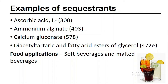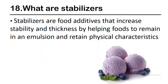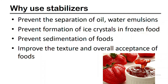Now, let's talk about stabilizers. Stabilizers are food additives that increase stability and thickness by helping foods to remain in an emulsion and retain physical characteristics. They prevent separation of oil-water emulsions, formation of ice crystals in frozen foods, and sedimentation of foods. And they improve the texture and overall acceptance of foods.